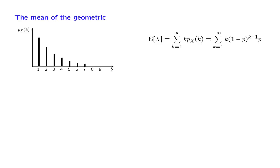We will now exploit the memorylessness property of the geometric PMF and use it together with the total expectation theorem to calculate the mean, or expectation, of the geometric. If we wanted to calculate the expected value of a geometric using the definition of the expectation, we would have to calculate an infinite sum, which is quite difficult. Instead, we are going to use a certain trick.